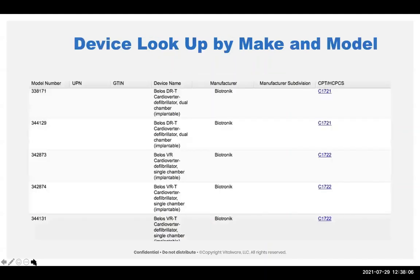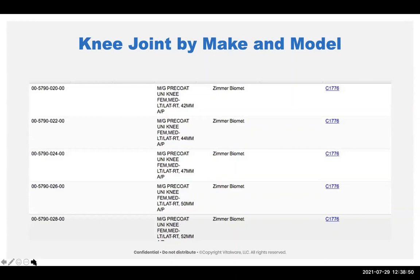Here's an example of a device lookup by make and model. There are all these C1721 and C1722 codes. When I go in the implant log, I have a Bellos VR cardio defibrillator, single chamber, made by Biotronik, model number 342873 — which I previously had as a C1721 (dual chamber) but actually needs C1722. Make sure for all devices in revenue code 278 that you have a lookup. In the EPIC system they use shells, which requires extra care. There are also knee joint examples by Zimmer, which has a whole set with different model numbers.